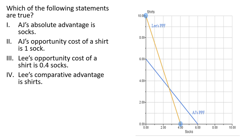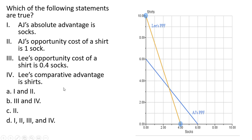Statement 4: Lee's comparative advantage is in shirts — that's the person with the low opportunity cost. As we determined, Lee does have a comparative advantage in shirts. He only gives up 0.4 socks to produce a shirt, whereas AJ gives up a full sock. So statement 4 is true, and therefore all statements are true.